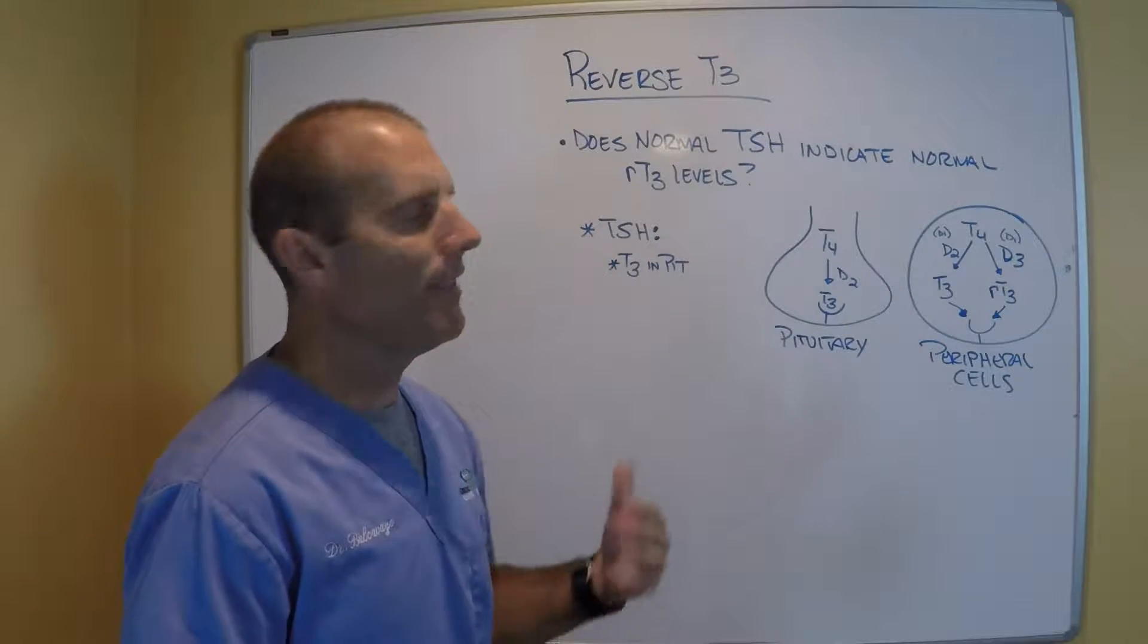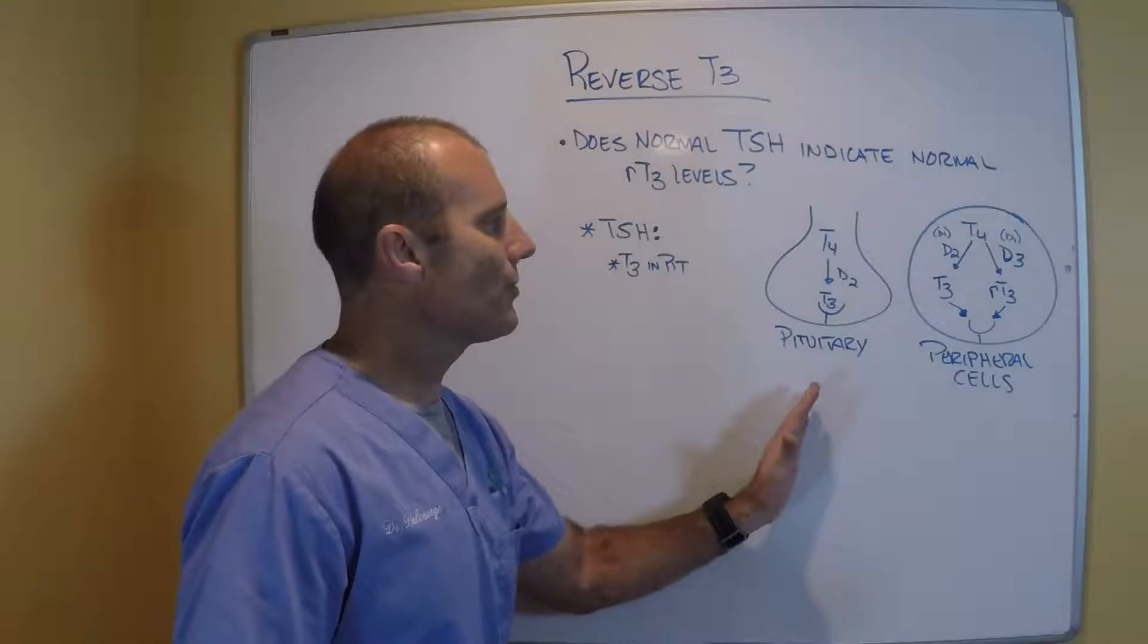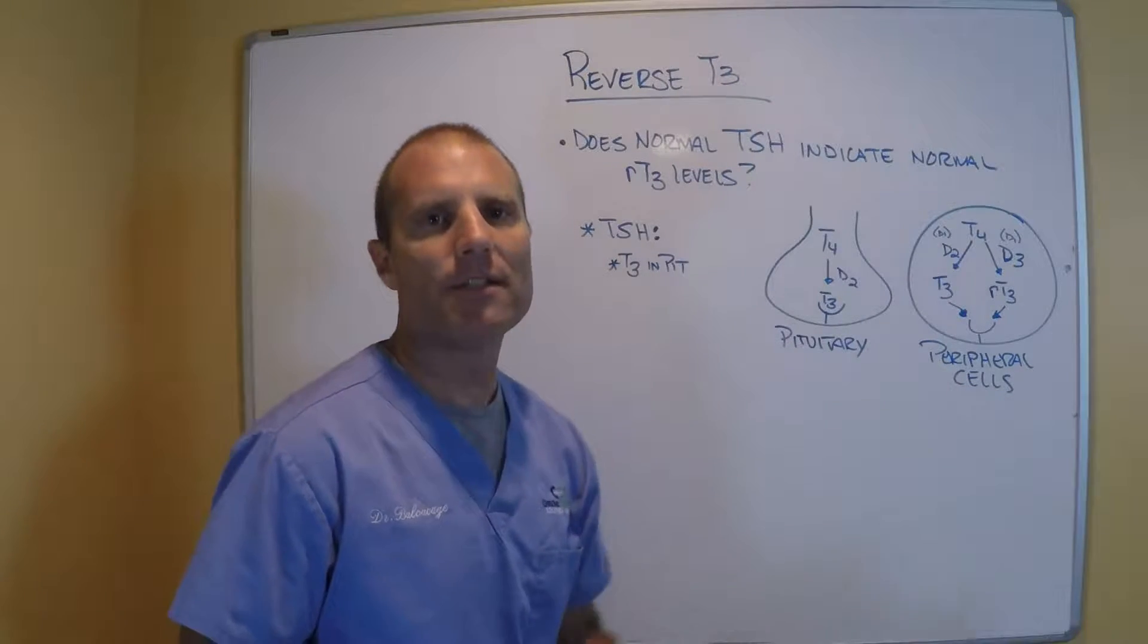The peripheral tissues have deiodinase 1, they have deiodinase 2, and deiodinase 3. So the pituitary actually acts a little different than the rest of the cells of the body.